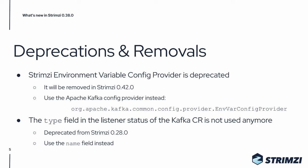Another removal is that the type field in the listener status in the Kafka custom resource will not be used anymore from this release on. It has been deprecated already in Strimzi 0.28 and as an alternative you can use the name field instead.